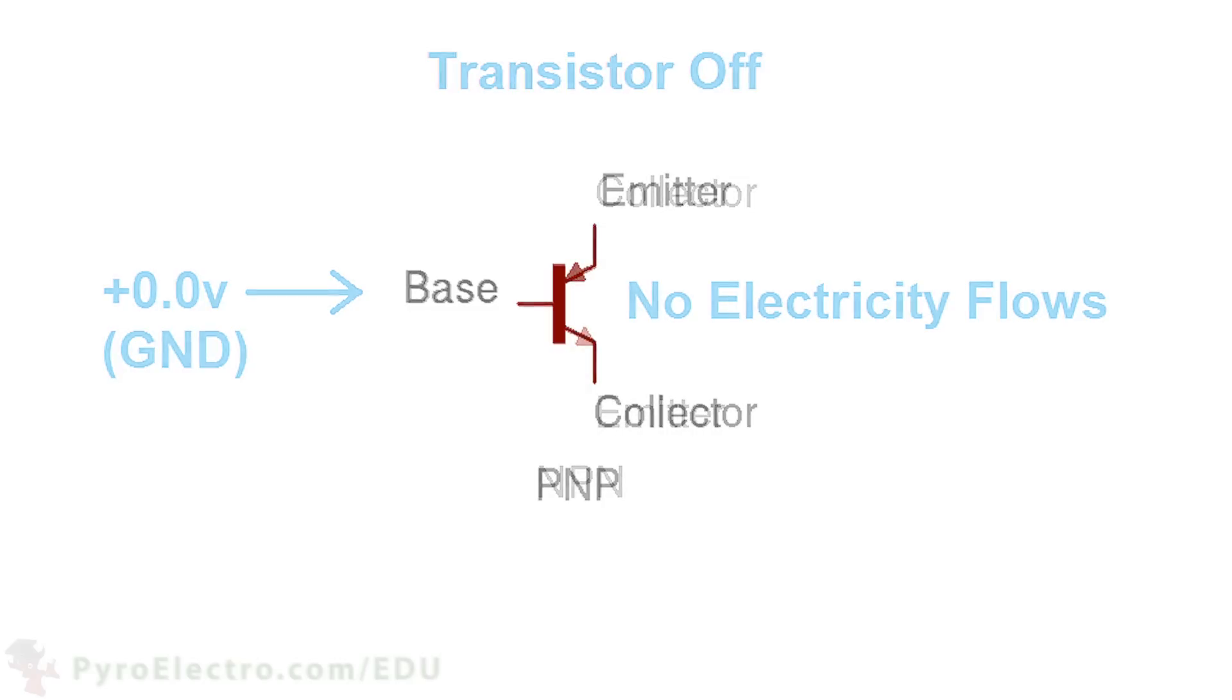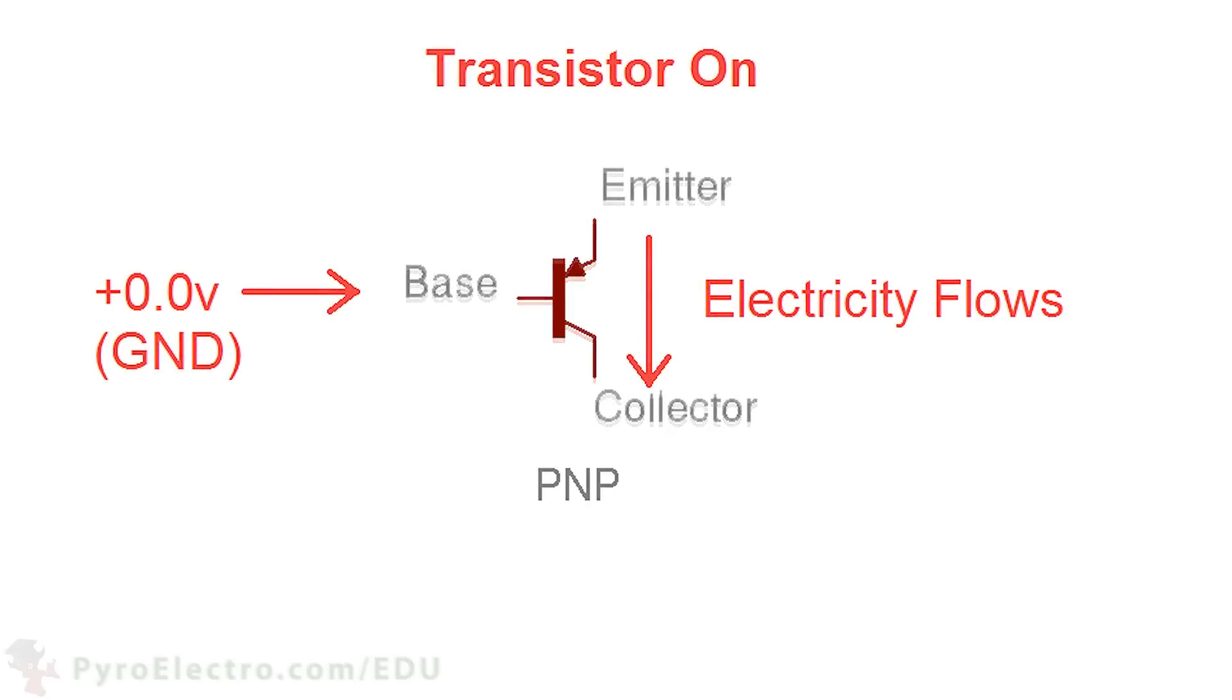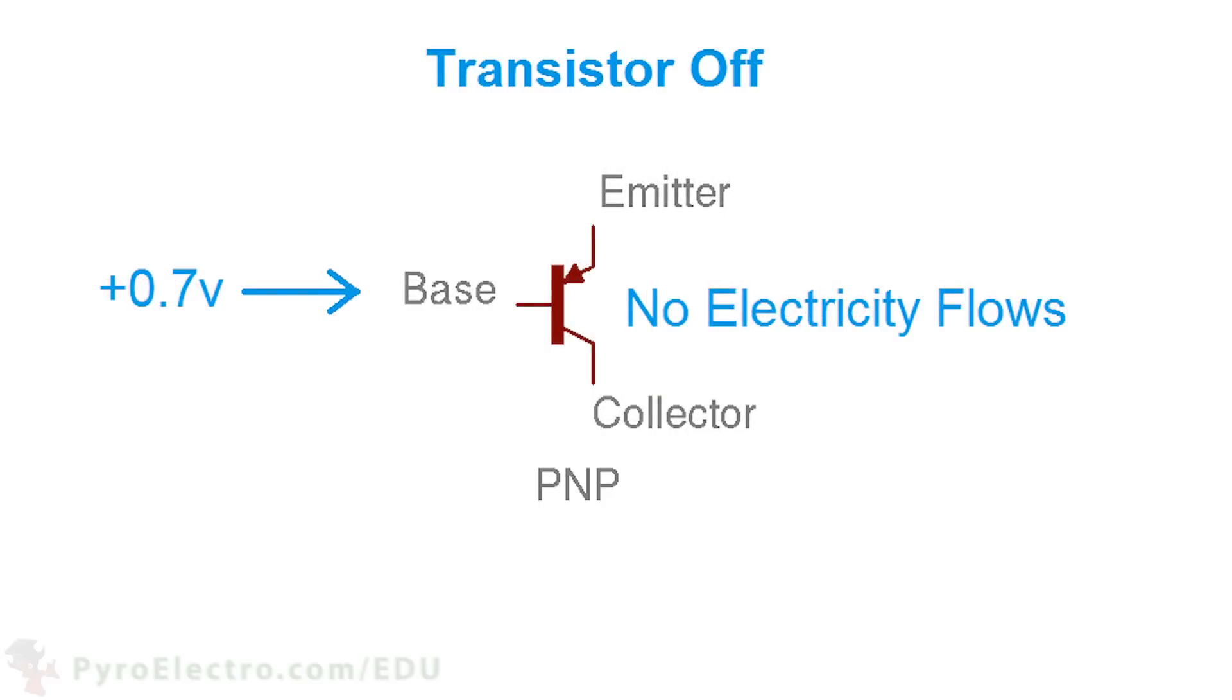The opposite of an NPN type transistor is called the PNP. The PNP transistor circuit symbol looks like this, with the emitter pin's arrow pointing toward the transistor. This transistor works in the opposite way, so when ground is at the middle base pin of the transistor, it turns on and electricity flows from the transistor. Similarly, when a voltage above 0.7V is at the base pin of the transistor, it remains in an off state.